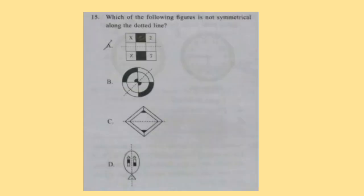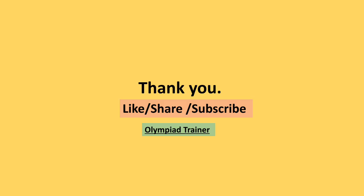Question 15: Which of the following figures is not symmetrical along the dotted line? Look at the figure carefully. Correct answer is option D — D does not have a symmetrical dotted line. Don't forget to hit the like button if you find the video useful and share it with your friends too.